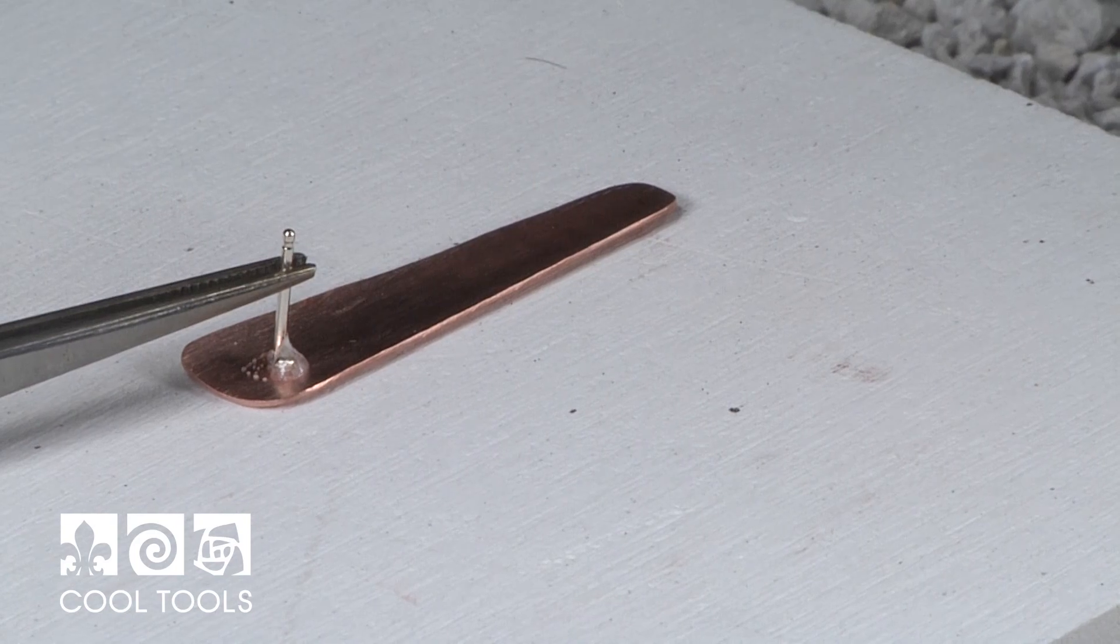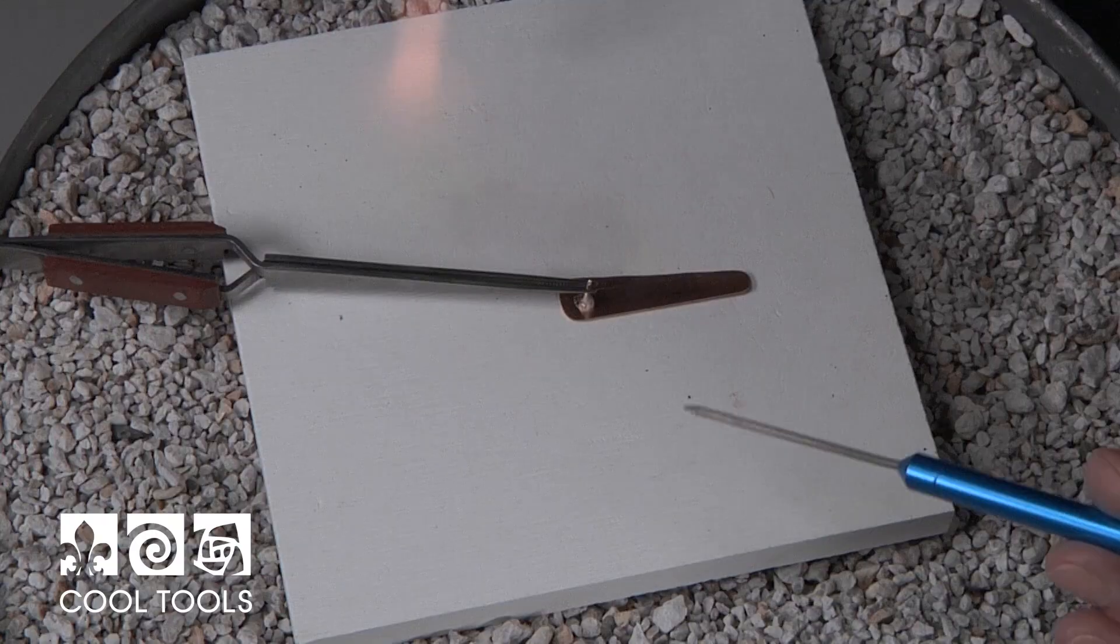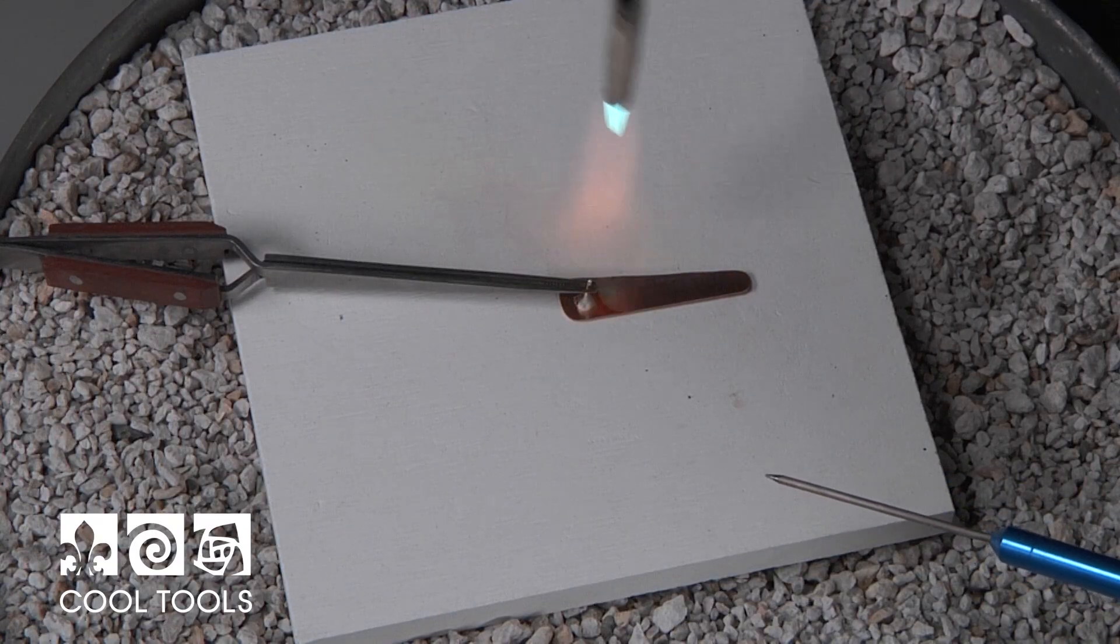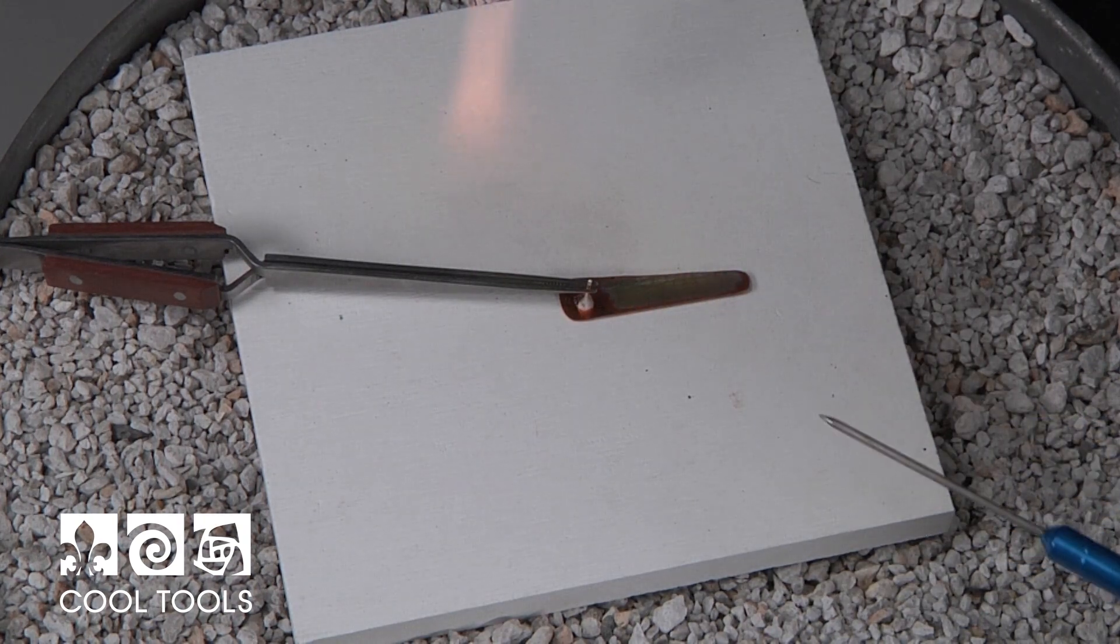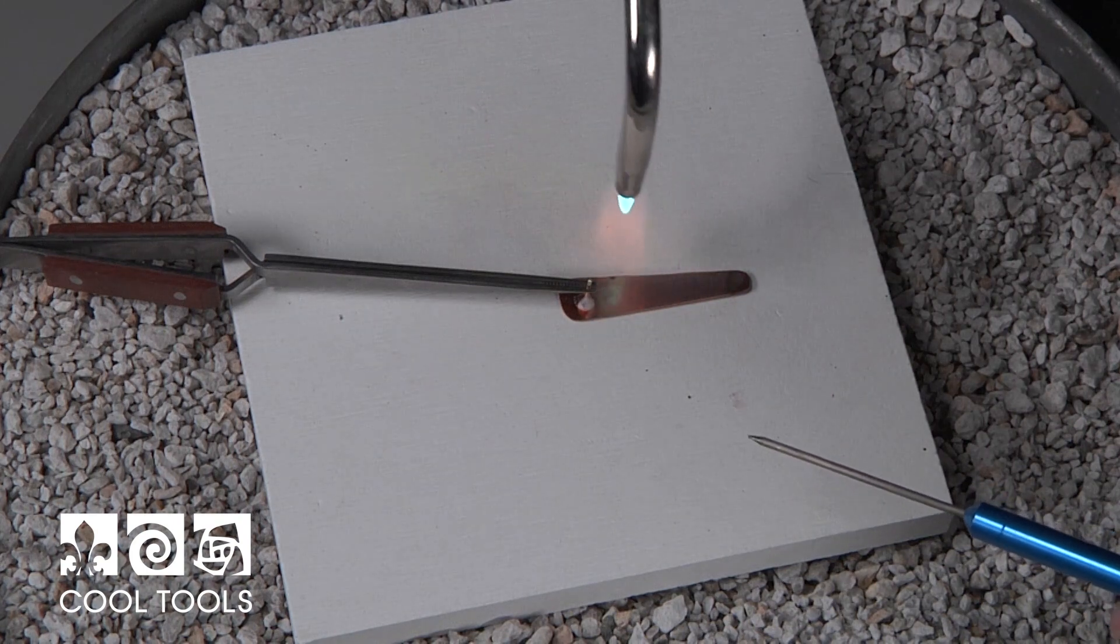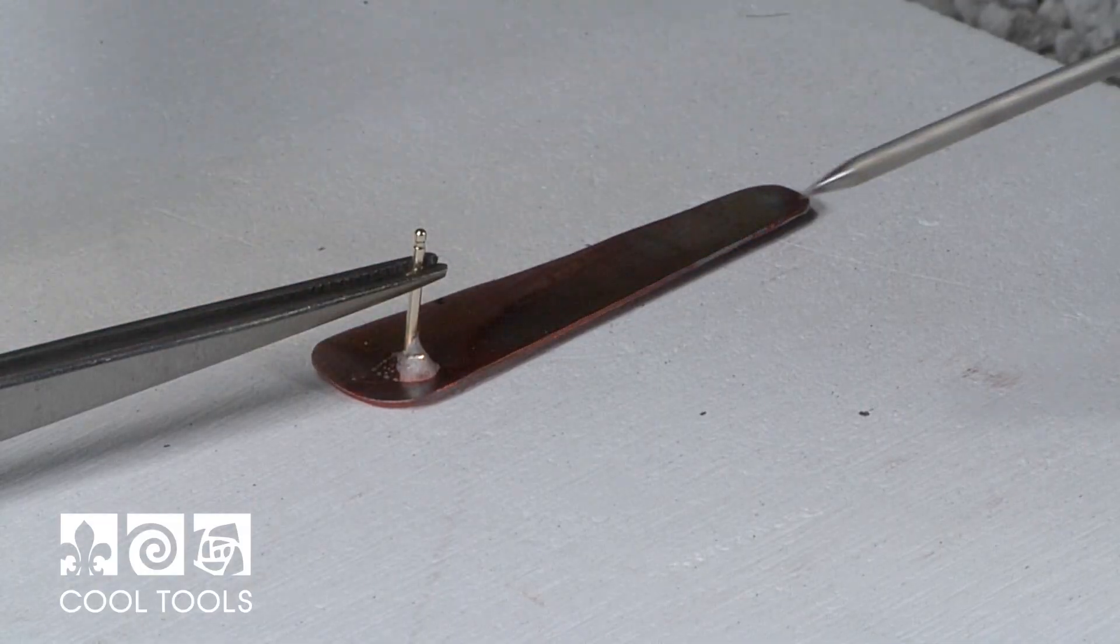So you can watch your flux and it's a good heat indicator. So when it gets to a crusty white you know that your moisture has evaporated out of your flux and it's now safe to go in and concentrate your heat to flow your solder.